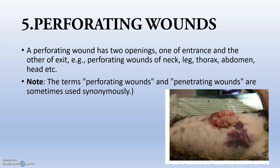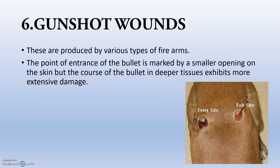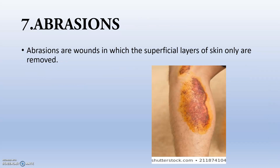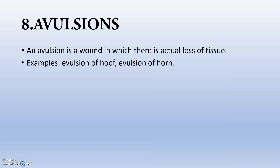A perforating wound has two openings — one for entrance and one for exit. The terms perforating wound and penetrating wound are often used synonymously but they differ. A gunshot wound also has an entry site and exit site and may produce extensive damage, mainly due to firearms. Abrasions are wounds in which the superficial layers of skin are removed and small petechiae will be present — commonly seen in accident injuries such as bike accidents. Avulsions involve a loss of tissue, such as avulsion of the hoof or avulsion of the horn.